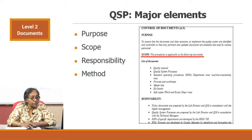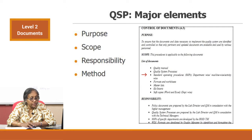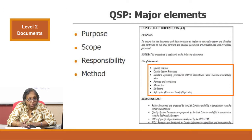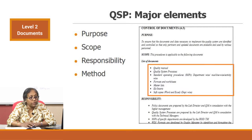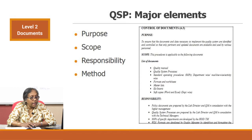The scope states: this procedure is applicable to the following documents — quality manual, QSPs, SOPs (department-wise, machine-wise, activity-wise), formats and worksheets, master list, kit inserts, soft copies and all electronic documents, and textbooks. All these have to be brought under document control. Under responsibility: policy documents are prepared by the lab director or management and the quality manager; quality system procedures are prepared by the lab director and quality manager in consultation with the technical manager.